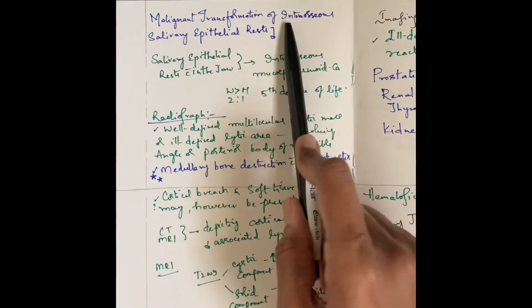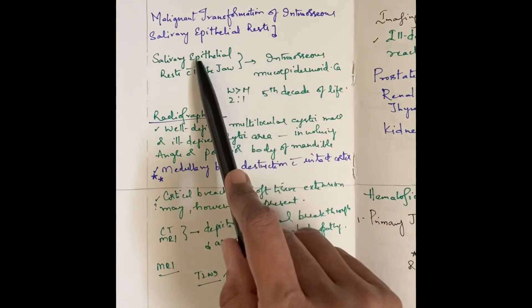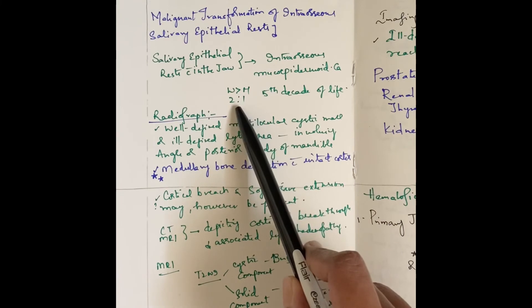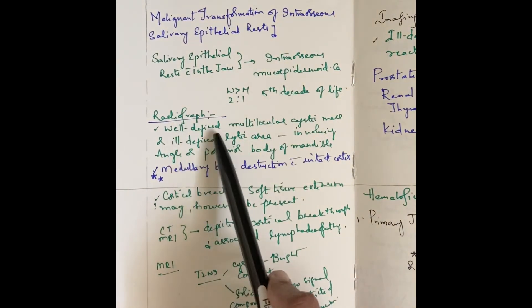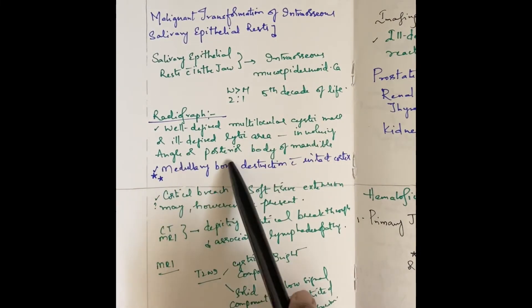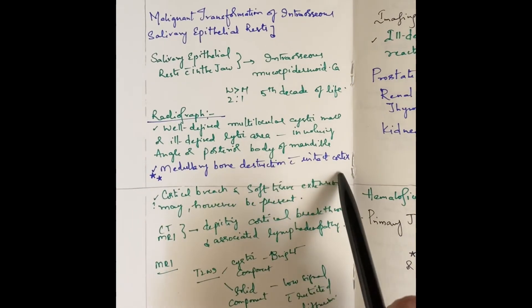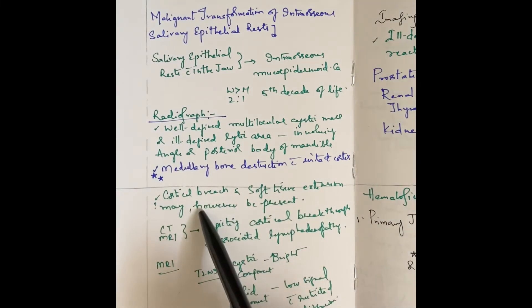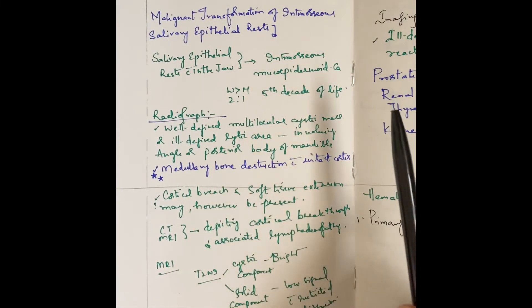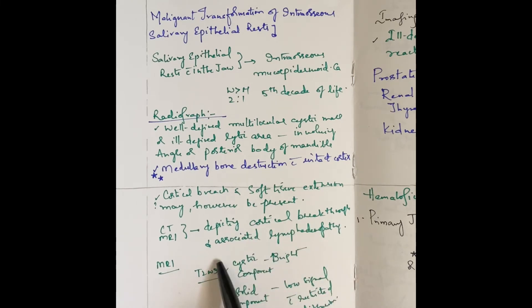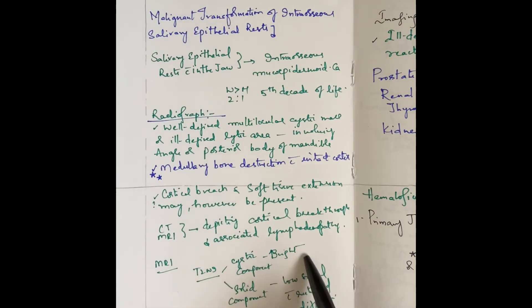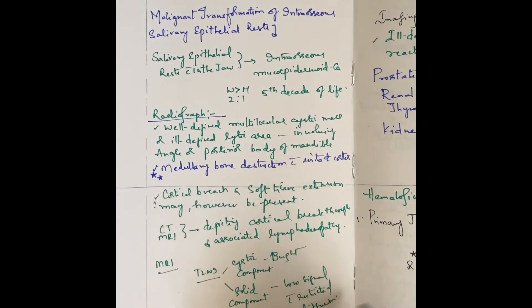Malignant transformation of intraosseous salivary epithelial rests within the jaw gives rise to intraosseous mucoepidermoid carcinoma. Women are more commonly involved, typically in the fifth decade of life. On radiograph there will be a well-defined multilocular cystic mass or ill-defined lytic area involving the angle or posterior body of the mandible. Medullary bone destruction with intact cortex is present initially; cortical breaches and soft tissue extension may however be present. CT and MRI are used to detect cortical breach and associated lymphadenopathy. On MRI, T2 cystic components will be bright and solid components will be low with restricted diffusion.